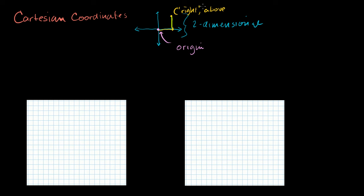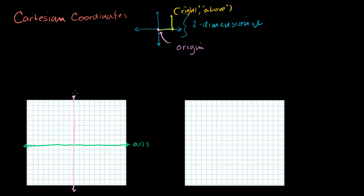I'll put that in quotation marks because this isn't the most precise way to talk about it, but this is essentially what Cartesian coordinates tell us. So let me graph some examples. Let me define my origin and draw some axes. This is my horizontal axis, also called the x-axis. And I'll tell you in a second why it's called that. And here is my vertical axis, done in pink.